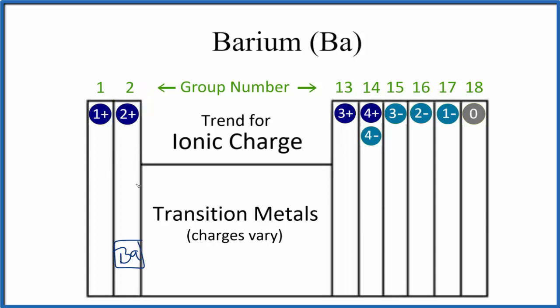That means barium would lose two electrons to become 2+, and an element over here would gain those two electrons to become 2-. Because we'd have a positive and a negative, they'd be attracted and we'd form an ionic bond.